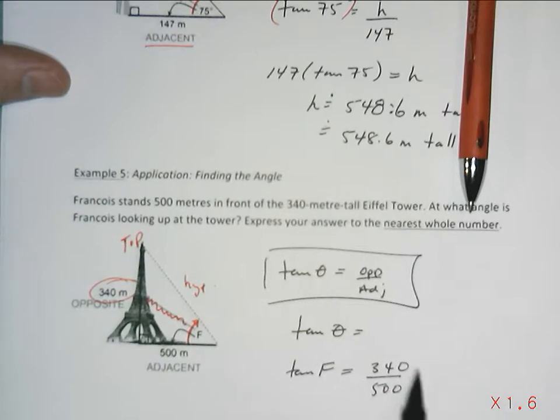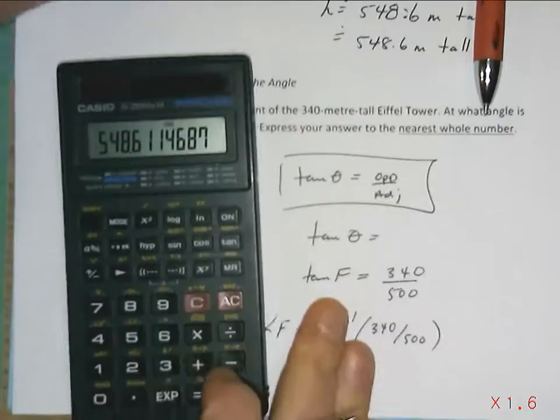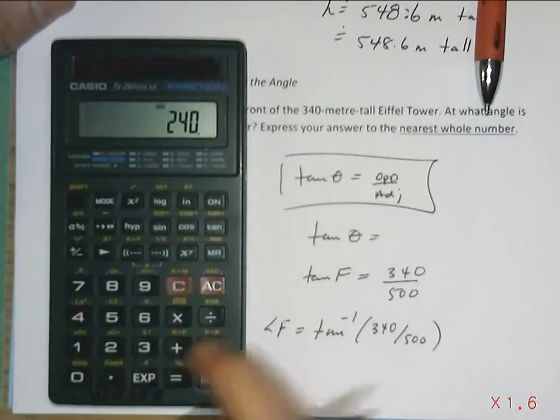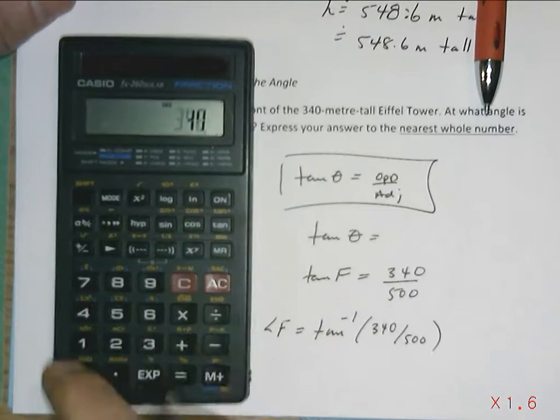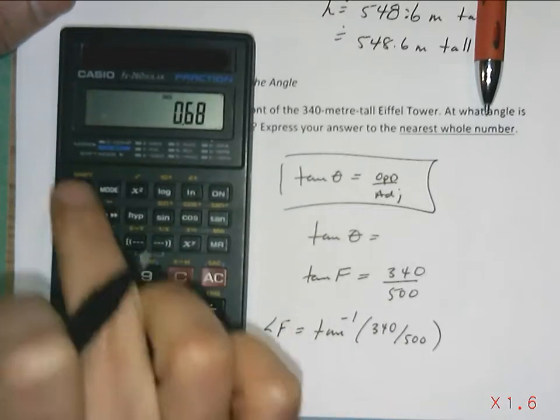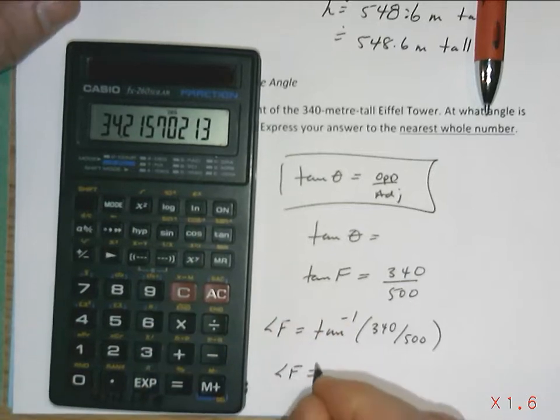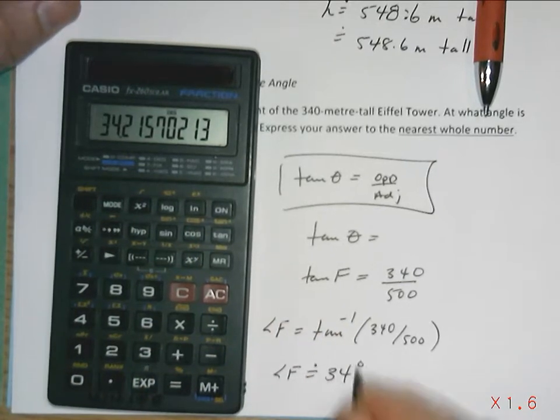So remember, we're going from a ratio back to an angle. So angle F is going to equal the inverse tan of 340 divided by 500 using your calculator. So 340, oops that's 240, 340 divided by 500. I get the decimal, second function, tangent, and angle F equals approximately 34 degrees.